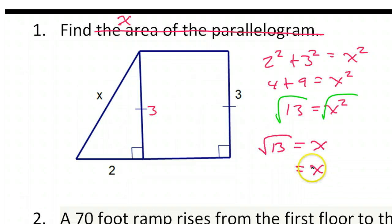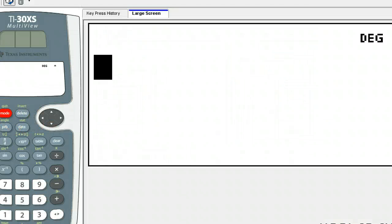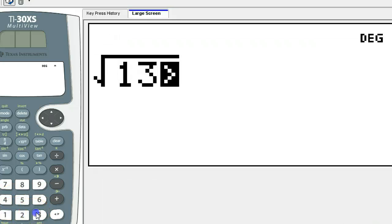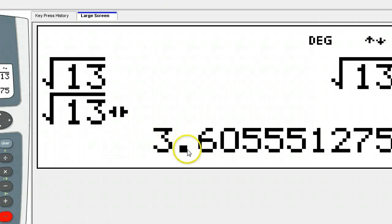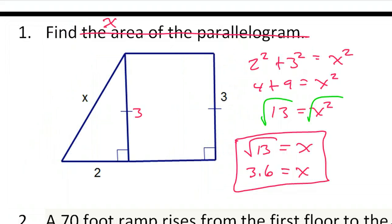Just in case we're doing decimals, we can do decimals if you want. Square root of 13, that's 3.6 if you do one decimal place. That's it for number one. I really don't think we could find the area. I think that's impossible.